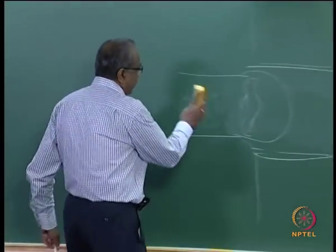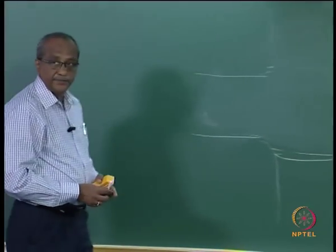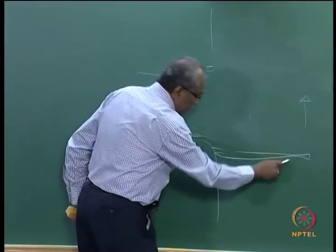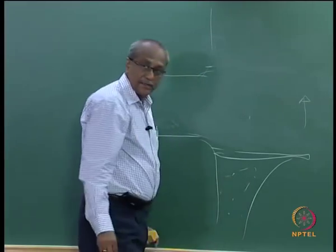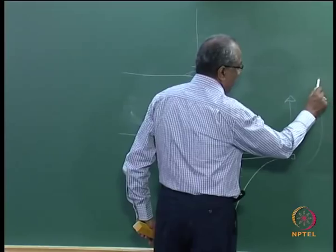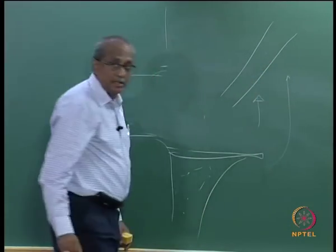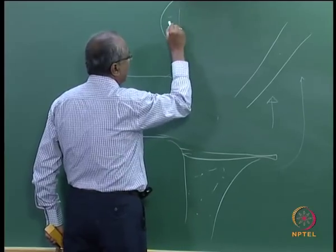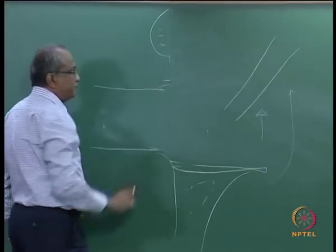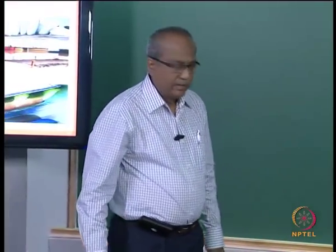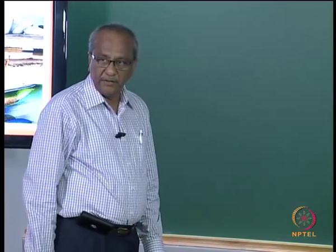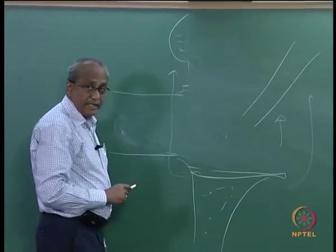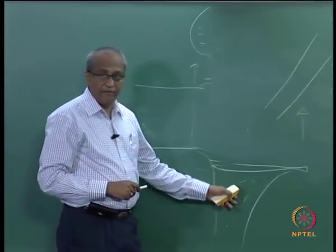Consider a port where sediment transport causes sand to accumulate and bypass into the approach channel — a common problem. On the downdrift side, erosion takes place and that area needs protection. This is a straightforward location where you can think of using a geotube, transferring sand from the accumulation side to fill geotubes on the eroding side, though distance must be considered.